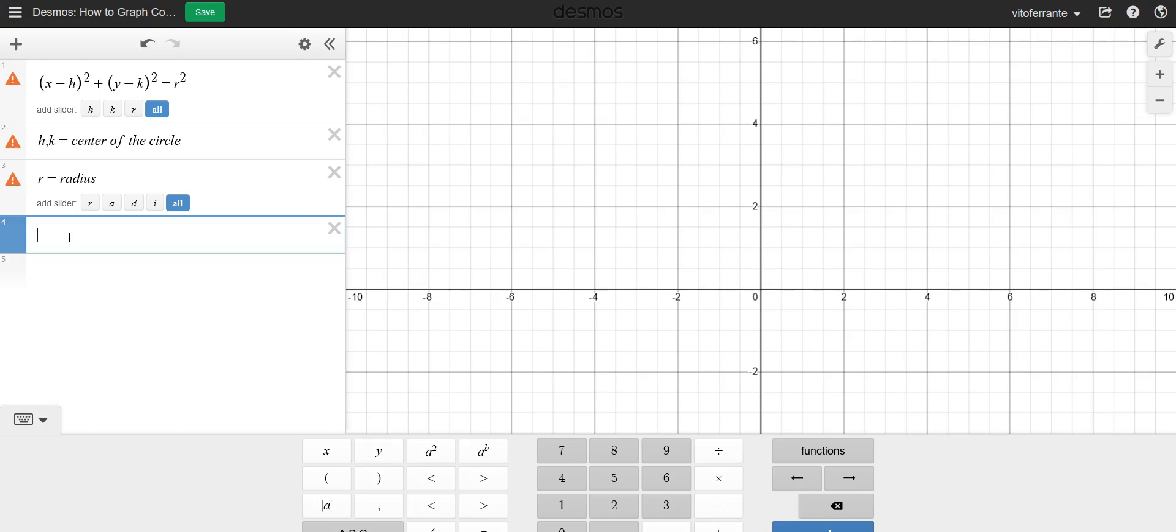Now we're going to do something really simple. We're going to create the unit circle first. Remember that the unit circle is centered at 0, 0 and has a radius of 1. So how would we fill in that information into this equation?